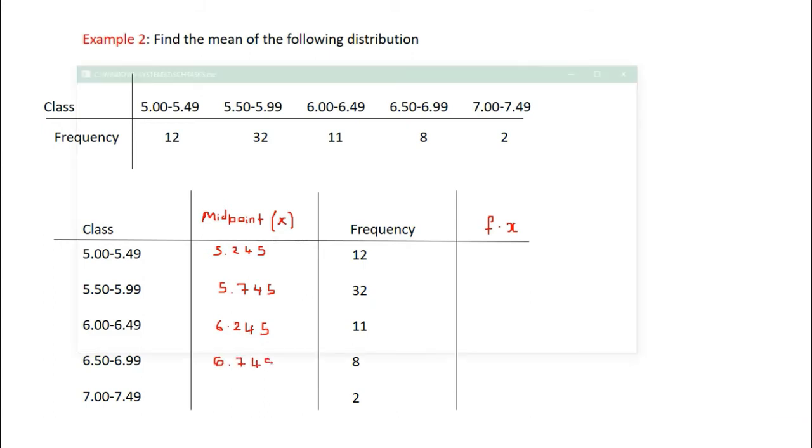And now our f x is, we have 62.94, and then 183.84, then we have 68.695, 53.96, and then we have 14.49.